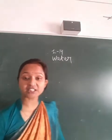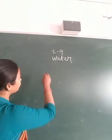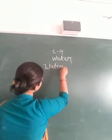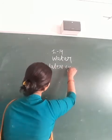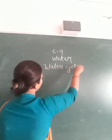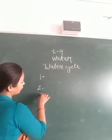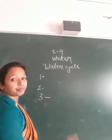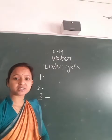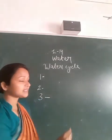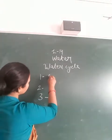The next process is the water cycle. In the water cycle, three processes are involved: the first one is evaporation, then condensation, and then precipitation.